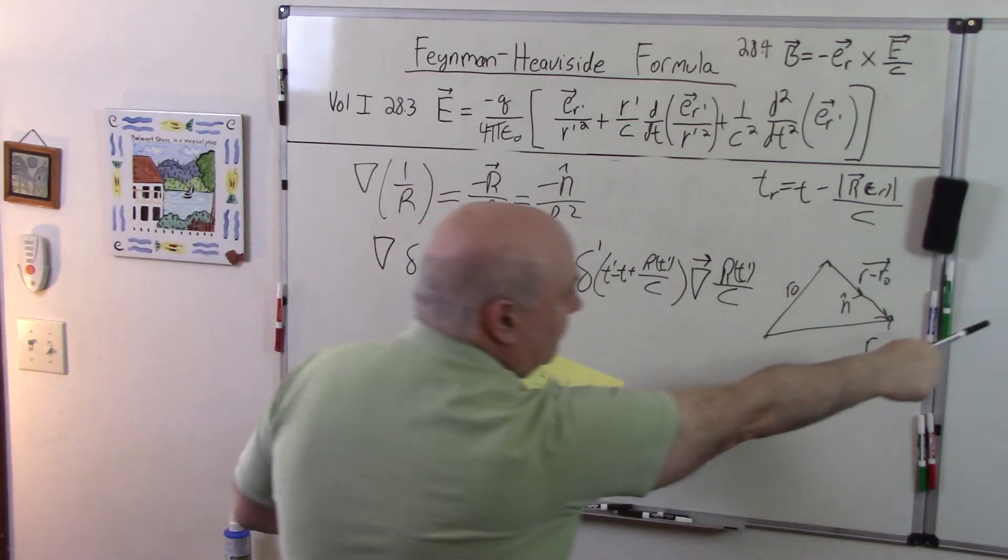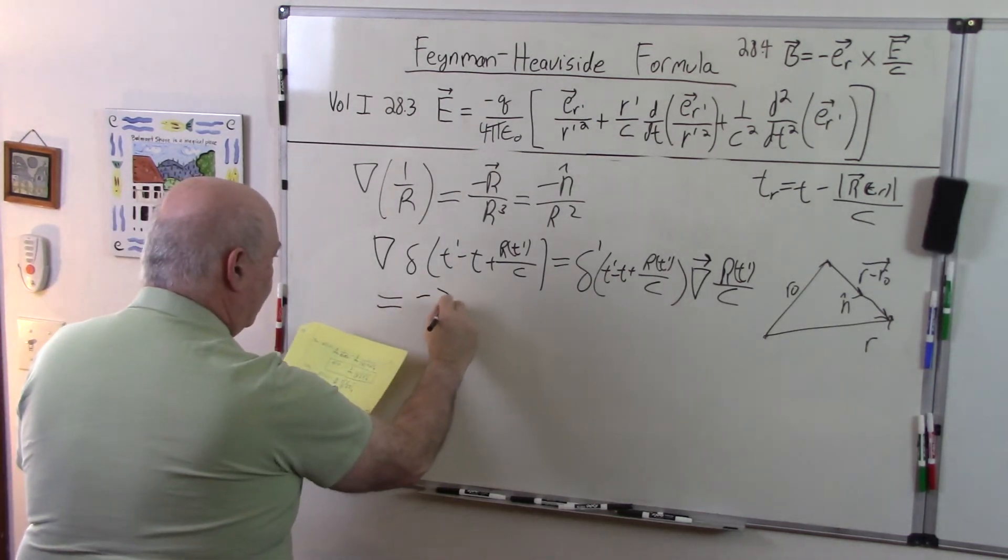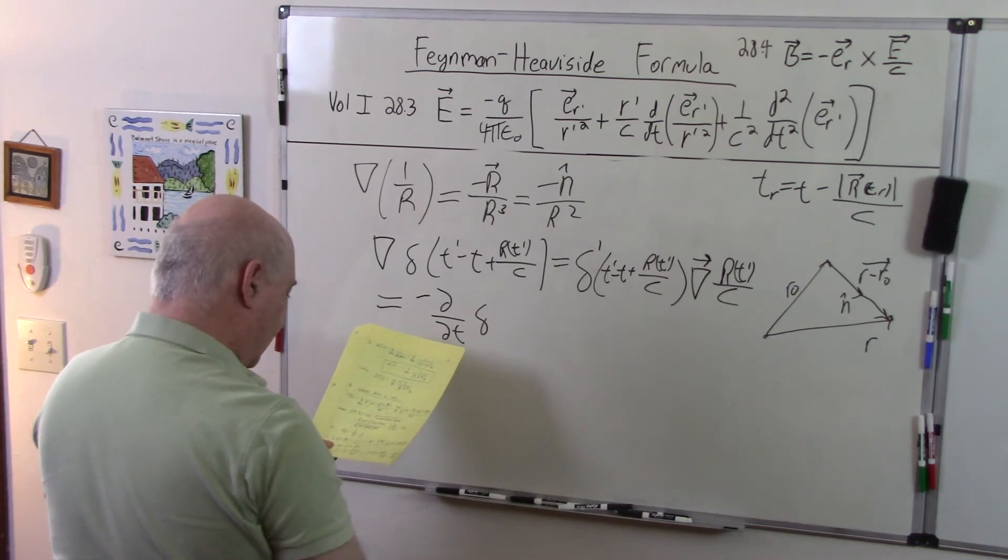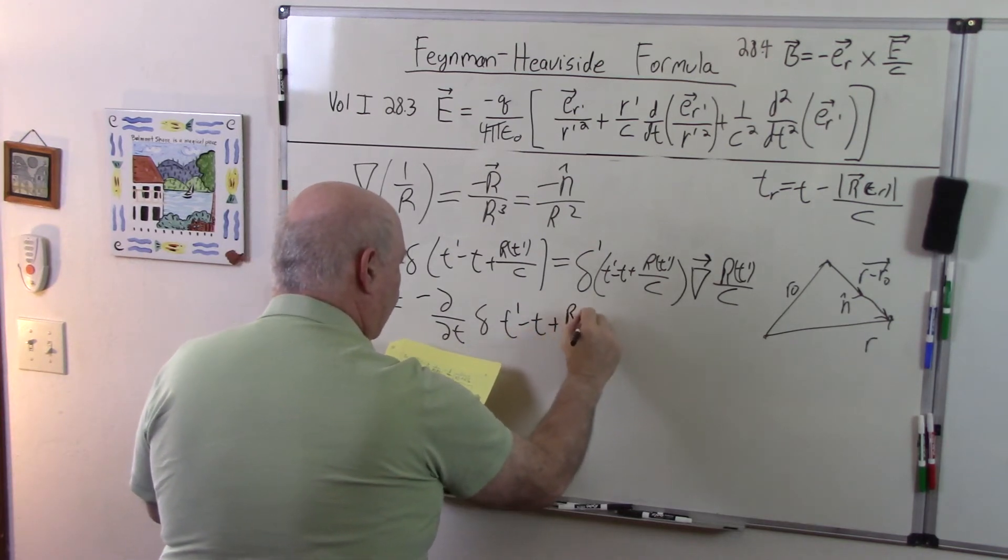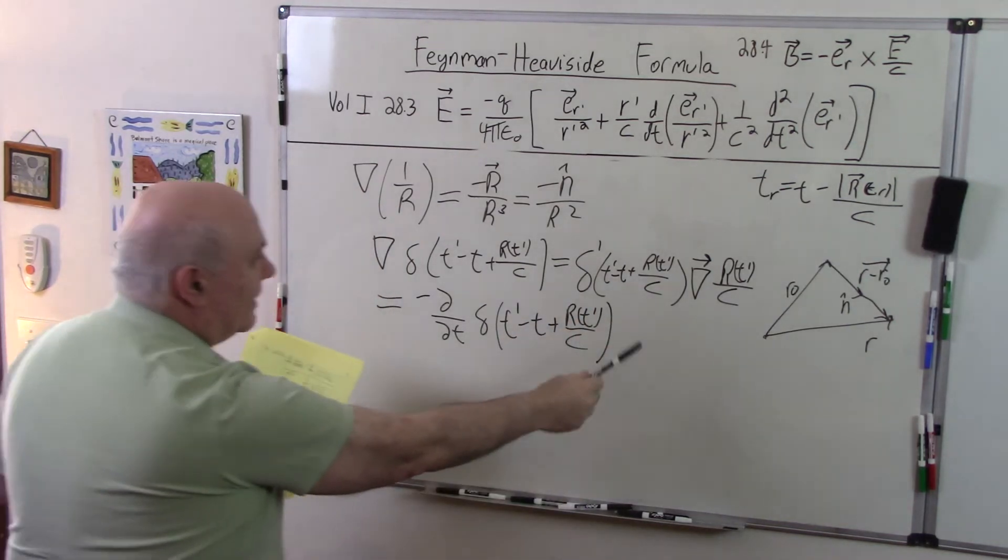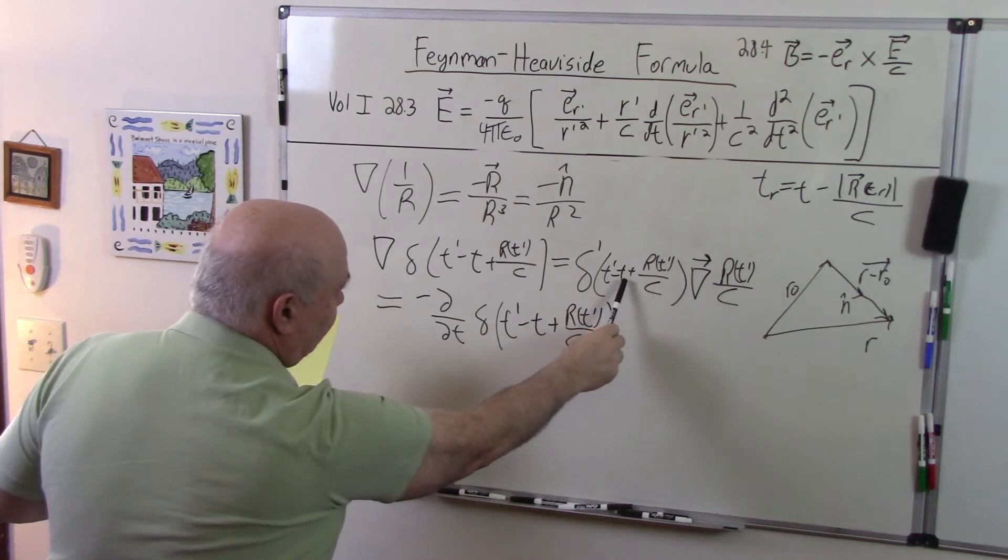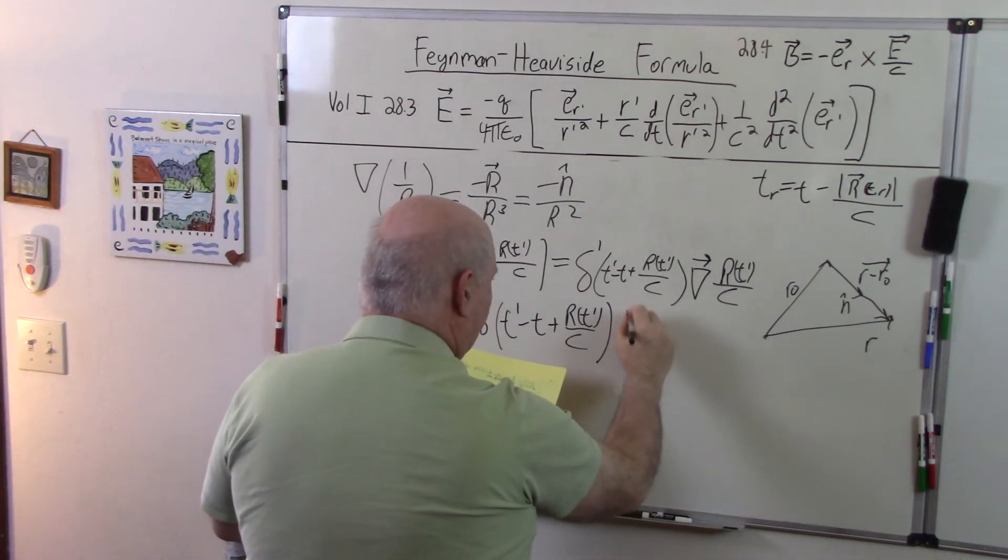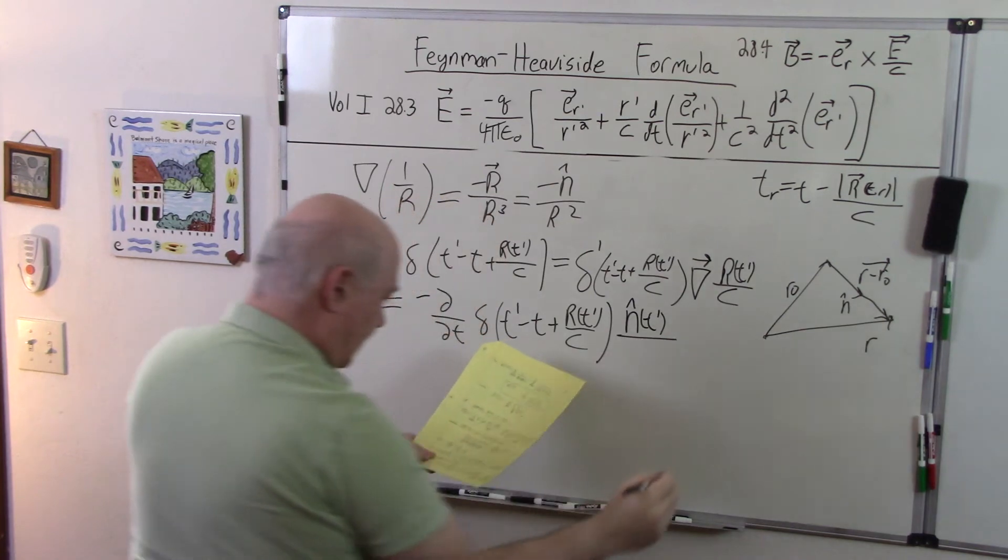So it's just the gradient R of t prime over c. We know what this is because we worked that out over there. So this is equal to minus the partial with respect to t, I'll explain where that comes from, times the delta function t prime minus t plus R of t prime over c. In other words, instead of just taking the derivative of this delta function with respect to the argument, we can take the derivative with respect to that, it's the same thing, and put a minus sign. And then we'll get n-carat t prime because we're doing the gradient of R of t prime, not R of t, over c.